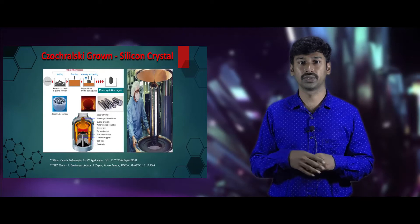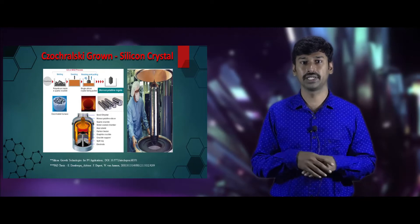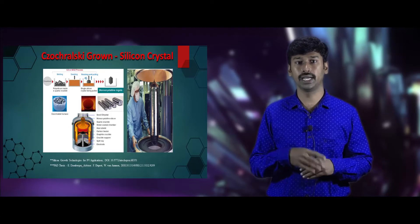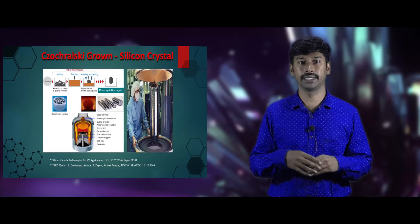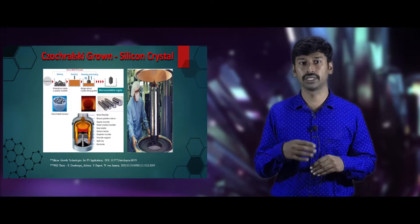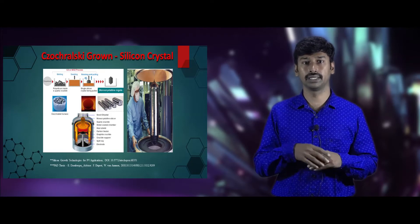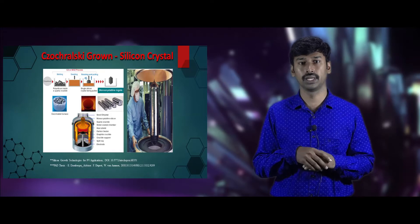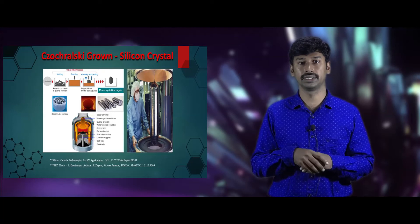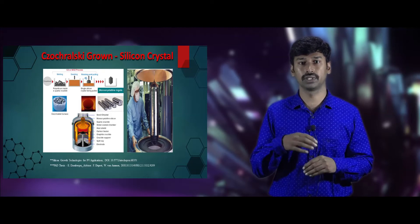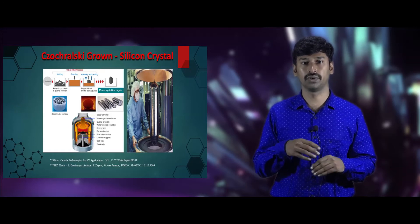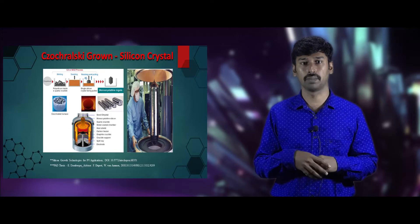The Czochralski grown silicon crystals are illustrated in the next figure, which explains the various steps involved. Initially, high purity polycrystalline materials are taken in a quartz crucible and melted at a temperature of 1400 degrees Celsius. After complete melting, the seed crystal is dipped into the melt, and at the interface of the seed crystal and the melt, growth is initiated. The grown crystal is pulled out from the melt by the pulling method, and then cut into wafers for various applications.